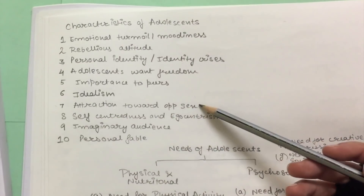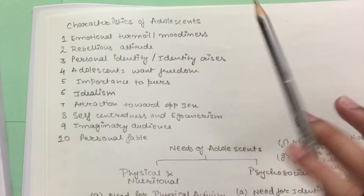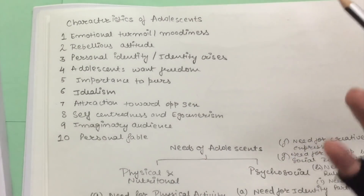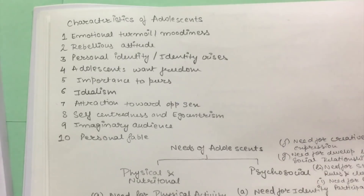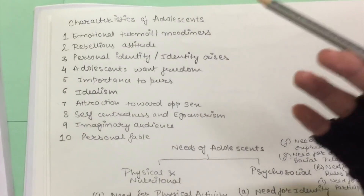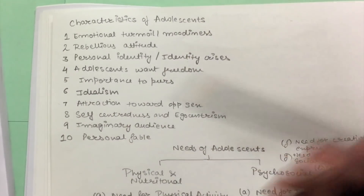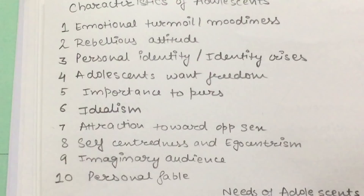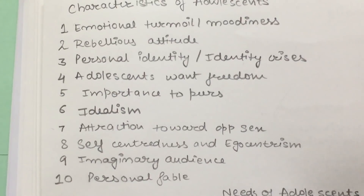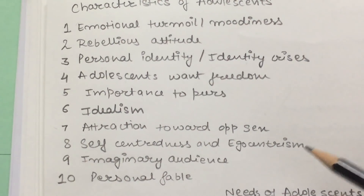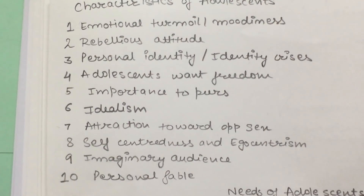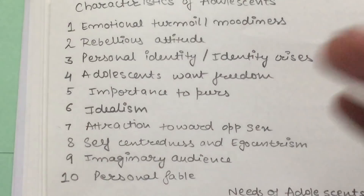Seventh is attraction toward the opposite sex — called heterosexual — or toward the same sex — called homosexual. They get concerned about their appearance, have awareness about everything, and sometimes experience crushes, which is an intense feeling of love toward a much older person of the same or opposite sex. Eighth is self-centeredness and egoism — children look from their own perspective, focus on their own needs rather than others, love talking about themselves, and have an unshakable belief that they are always right.